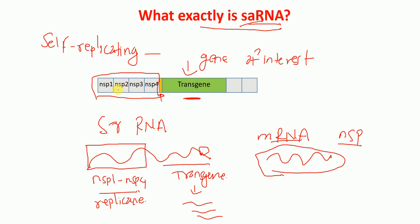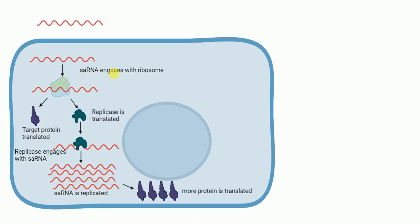These sequences function as the replication machinery and therefore they replicate this transgene when inside the cell. The detailed mechanism I will explain later. So how does self-replicating RNA replicate our gene of interest and produce more protein? This self-replicating RNA goes inside the cell, and in the cell, this self-amplifying RNA engages with the ribosome, because the ribosome is the machinery in the cytoplasm that does protein production from RNA.